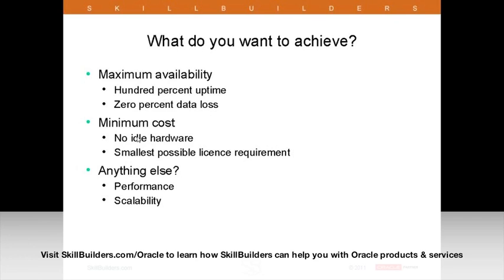So then we move on to how we can do it with minimum cost. Many sites don't like the idea of idle hardware. Oracle's maximum availability architecture tends to rely on machines sitting there doing nothing — a phrase I personally loathe. I try to explain it isn't doing nothing; it's protecting the survival of your business. But I understand why people want to bring fault-tolerance machines into active use, perhaps enhancing performance or scalability, and in software terms reduce licensing requirements. We also need high performance and scalability.